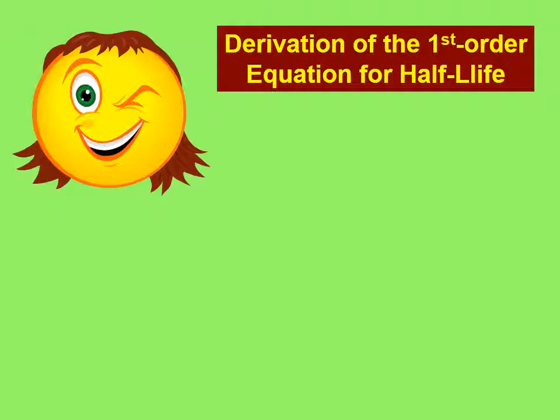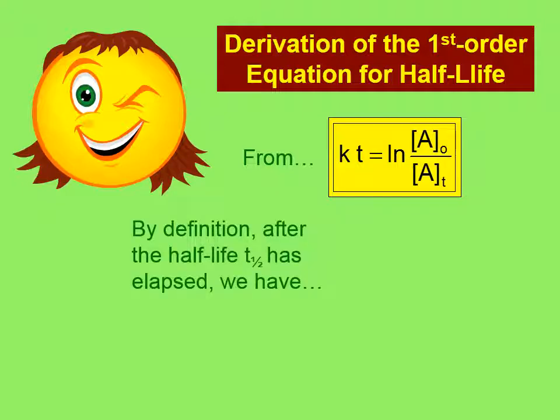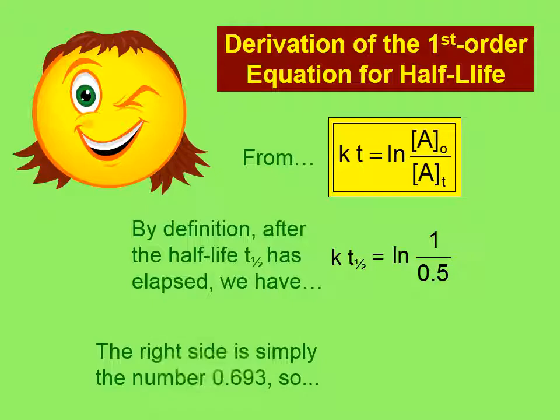Here's how we get that first-order equation for half-life. If we start with that equation, by definition, after the half-life has elapsed, we only have one-half of whatever it was we started with. So if we started with 1, after one half-life we'll only have half of it. And the half-life will have passed, so I put t₁/₂ in there. The right side of that is just the natural log of 2. That's how you get your half-life equation, derived directly from this first-order rate law equation.